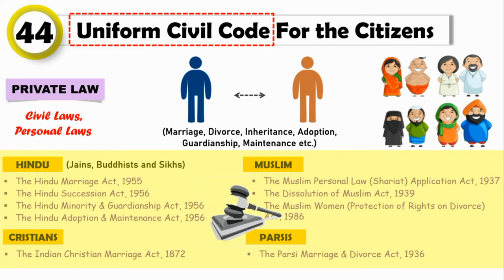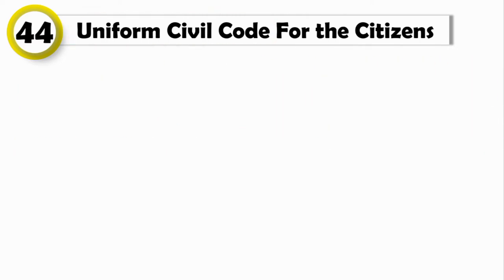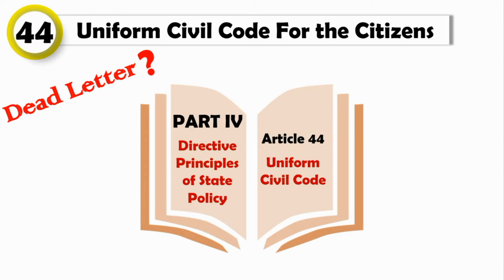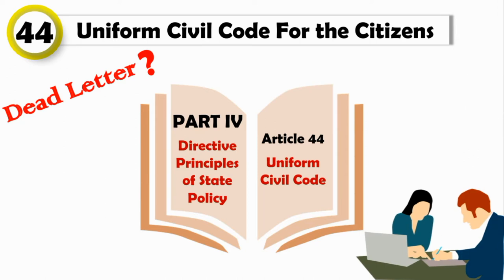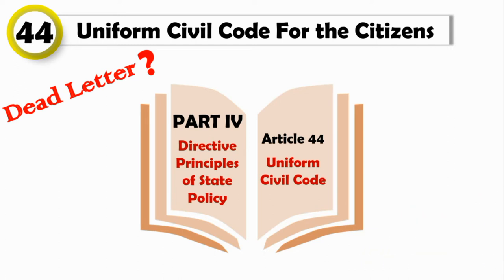Article 44, which talks about Uniform Civil Code, has many times been declared as a dead letter of the Indian Constitution by the Supreme Court. Because this article has been part of the Indian Constitution since its commencement, but it has never been used. The central government tried several times to make laws regarding Uniform Civil Code but had to take a step back because of various reasons. Let's talk about the reasons that led to the failure of Uniform Civil Code in India, and why it is still a dead letter despite being supported by so many people.